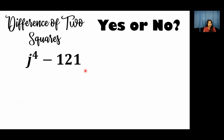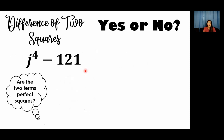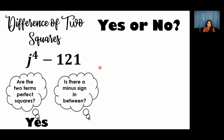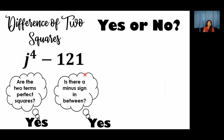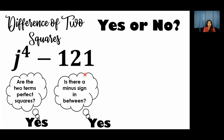Next example: j to the 4th minus 121. First condition — are the two terms perfect squares? Yes, j to the 4th is a perfect square and 121 has a square root. Second condition — is there a minus sign in between? Yes, clearly there is a minus sign. Therefore, j to the 4th power minus 121 is considered a difference of two squares.